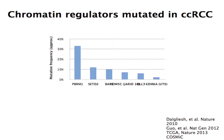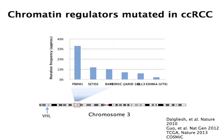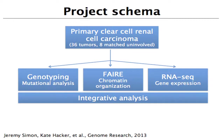In clear cell renal cell carcinoma, a class of mutations has been identified through a number of publications, including a remodeler PBRM1, as well as histone modifiers and other nuclear enzymes. Interestingly, three of these — PBRM1, SETD2, and BAP1 — which are the most commonly mutated in clear cell renal cell carcinoma, essentially coexist on the short arm of chromosome 3, which has VHL at the very distal end. So there's often loss of the short arm of chromosome 3. We proposed a project several years ago to study the consequences of mutations in these chromatin regulatory proteins across clear cell renal cell carcinoma.